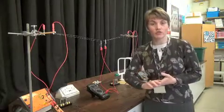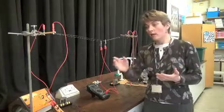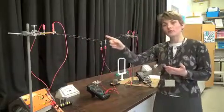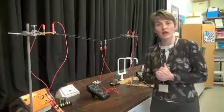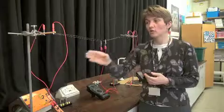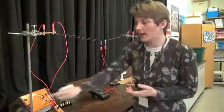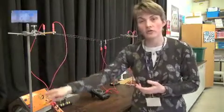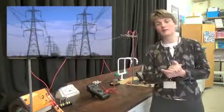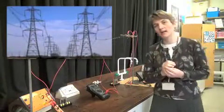The electricity is distributed around the country along cables which the electric current passes down. You would have seen these cables passing across the countryside being held up by pylons, which are the big metal poles which hold the electrical cables.